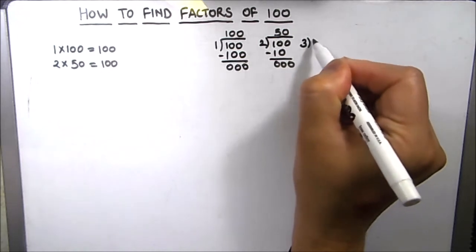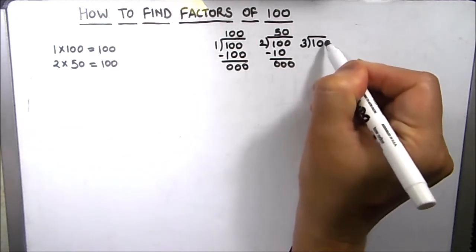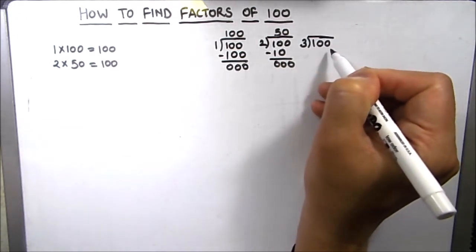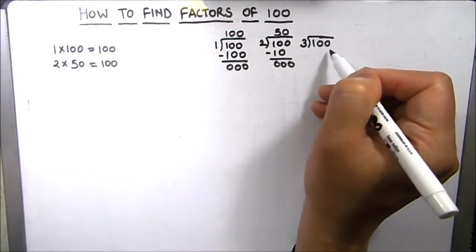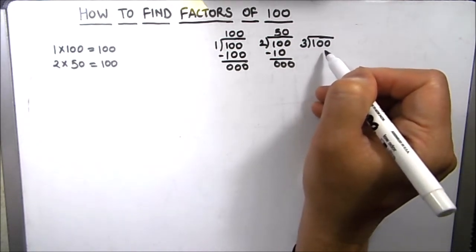Next number is 3. As 100 is not fully divisible by 3, so 3 is not a factor of 100.